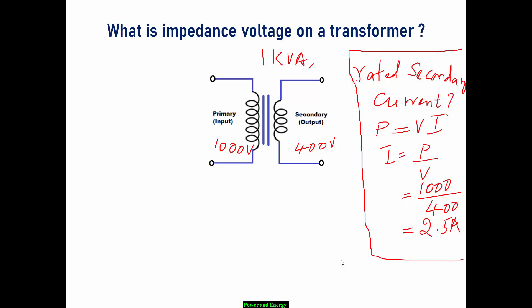Now let's go for short circuit test. That means primary is provided with variable voltage and secondary is short-circuited through a meter to measure the short circuit current. Connect the input to the variable supply voltage.